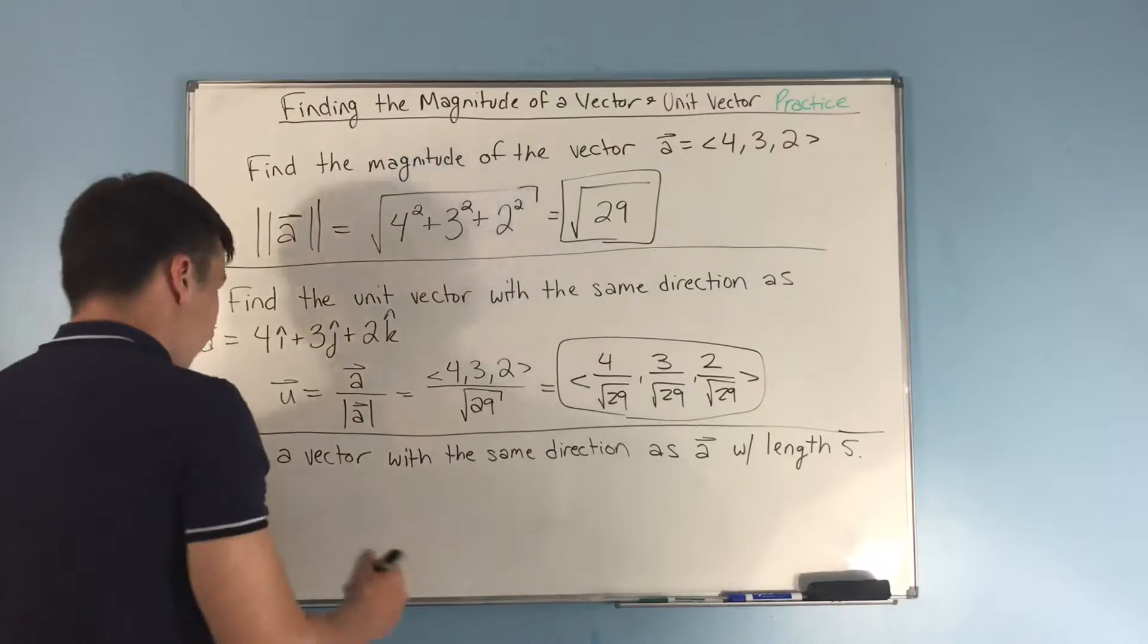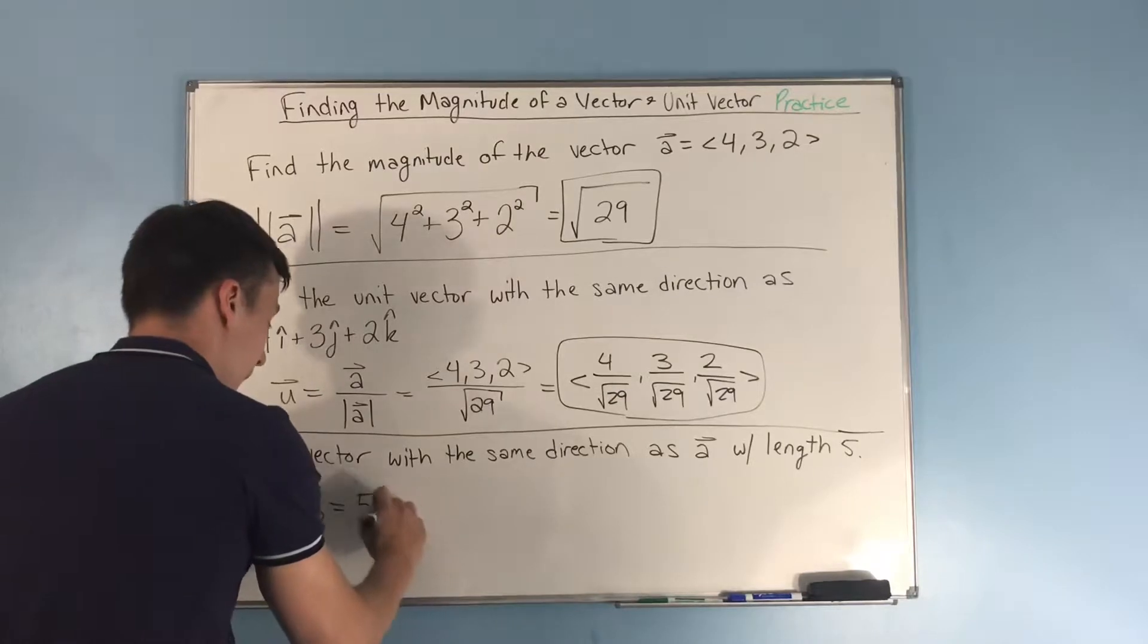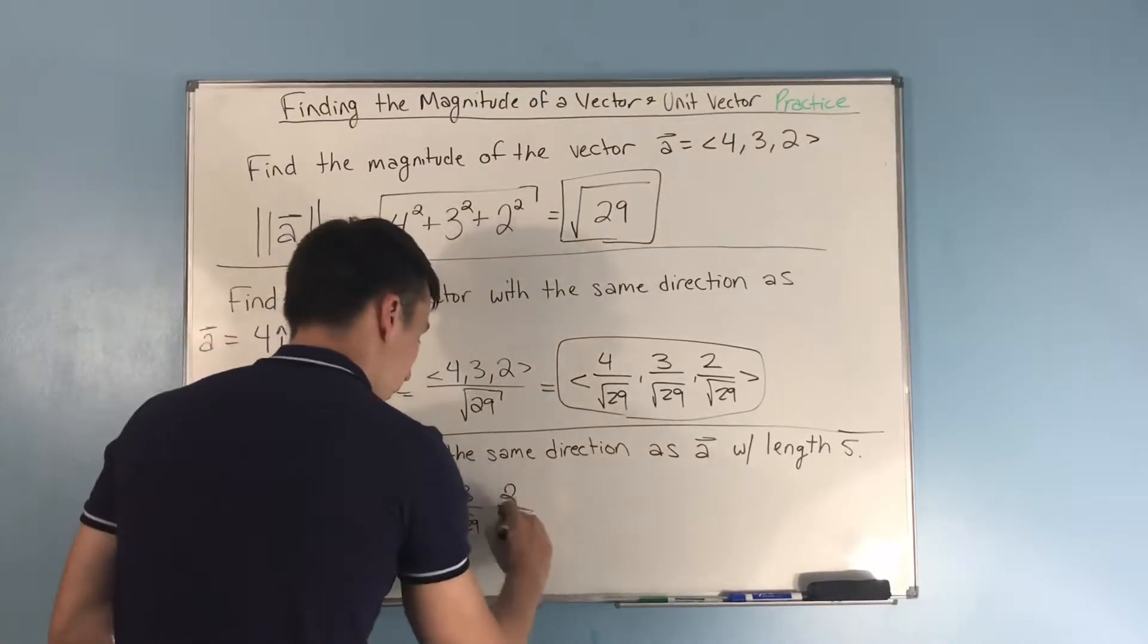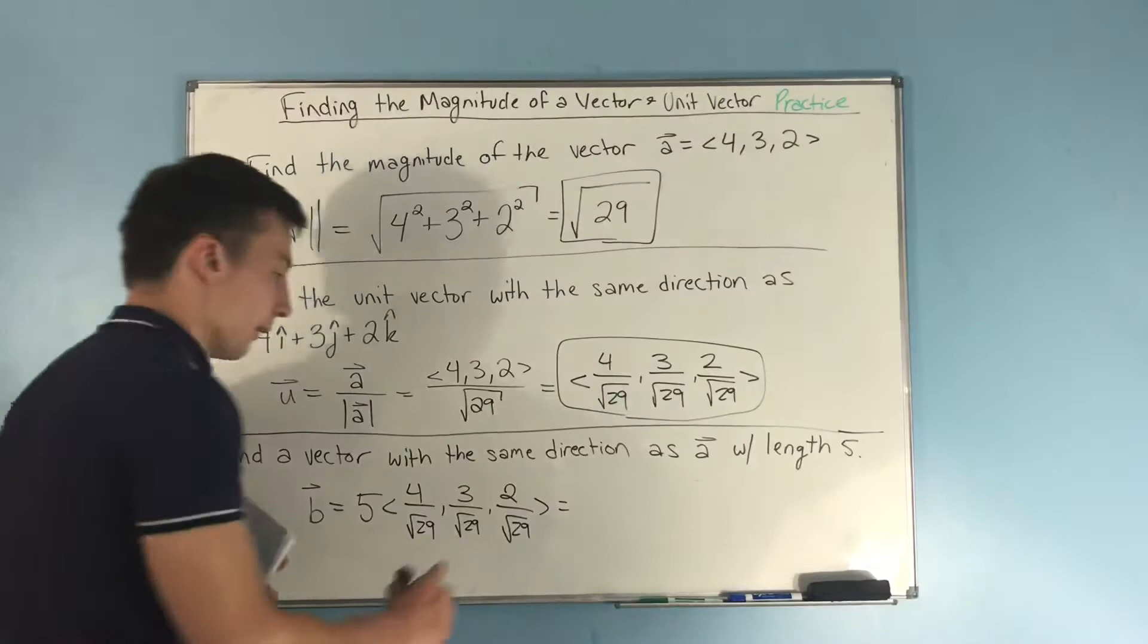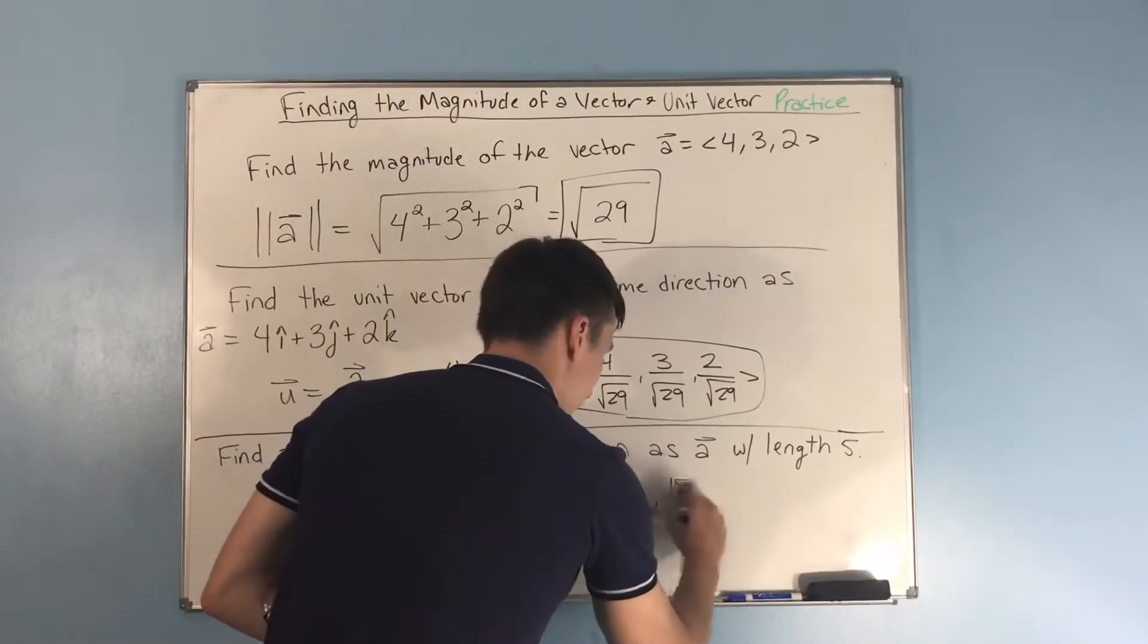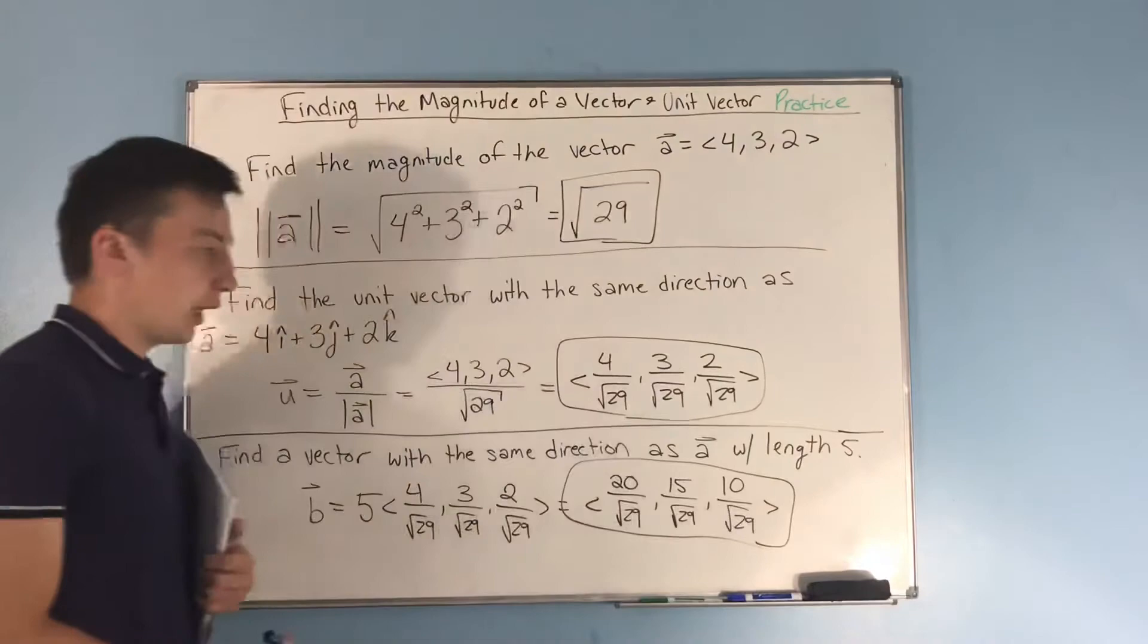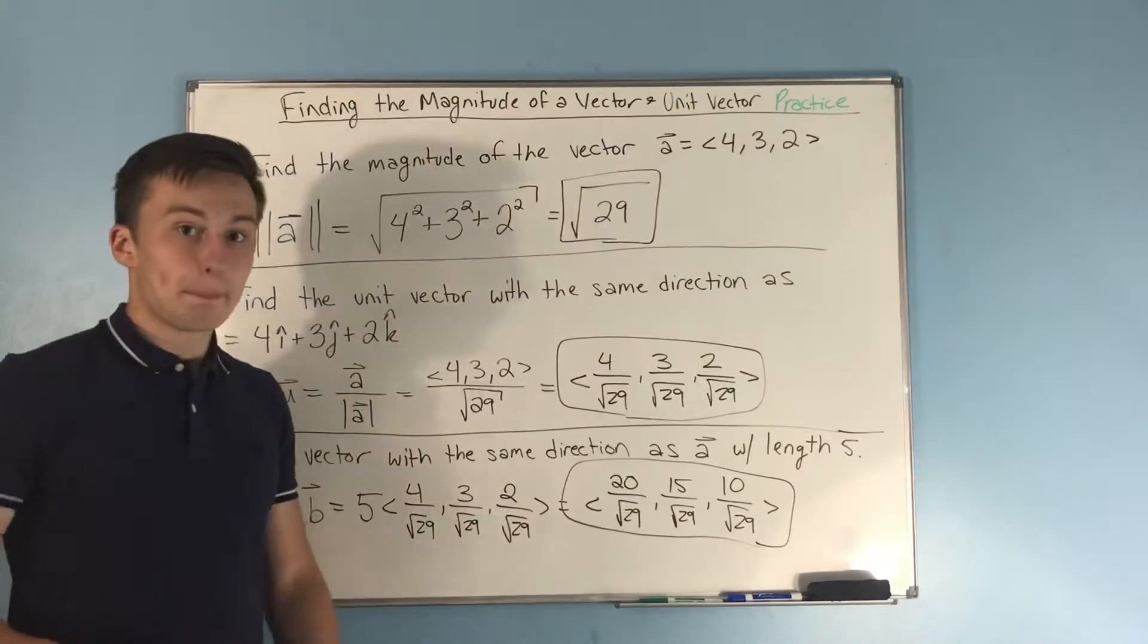So, we can find that vector, let's call it B. And it's going to be 5 times <4 over √29, 3 over √29, 2 over √29>. Well, now you just multiply 5 through to each component, right? This ends up being 20 over √29, 15 over √29, and 10 over √29, and that is vector B. And it has length 5, and it's in the same direction as your vector A.